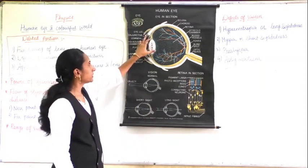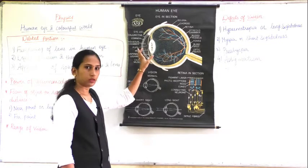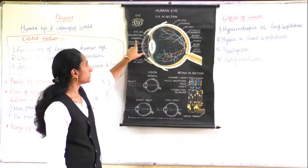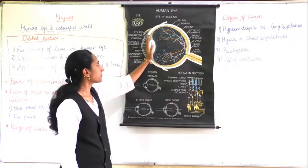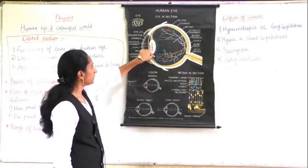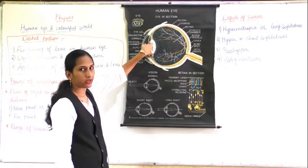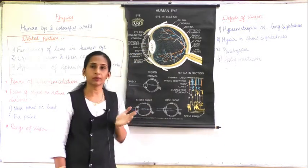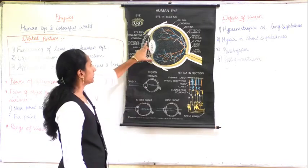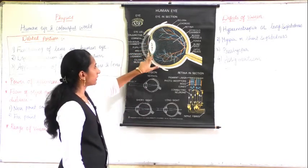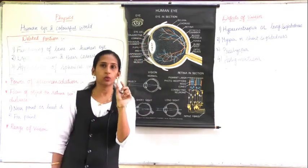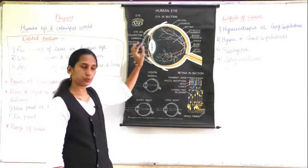The outer transparent layer of the eye is called the cornea. Inside it there is a muscular diaphragm whose color varies — its size also varies. This muscular diaphragm is called the iris. Inside the iris you can see a small hole or dark spot, which is called the pupil.